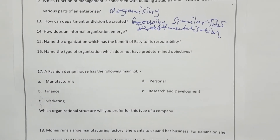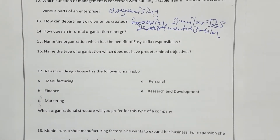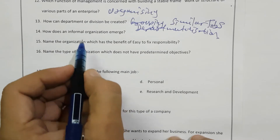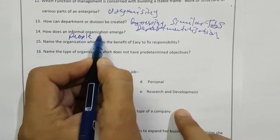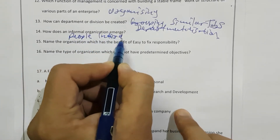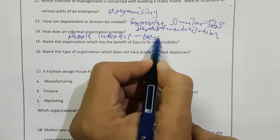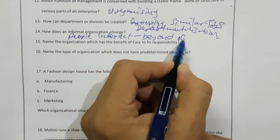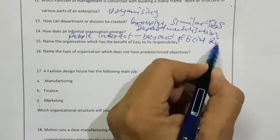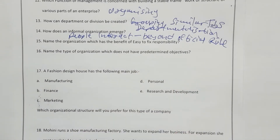Next is how does informal organization emerge? Informal organization emerges when people interact with each other beyond their official role. Unofficially they are meeting and interacting with each other, and that is how informal organization is created.